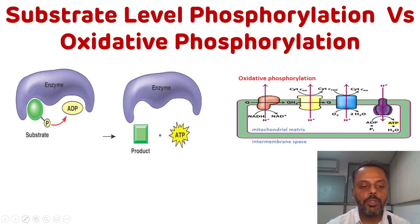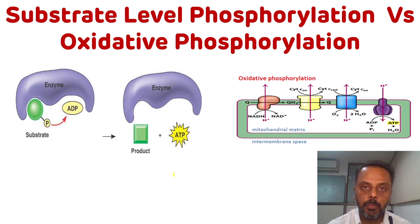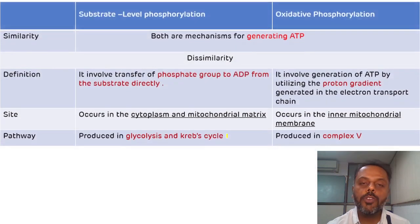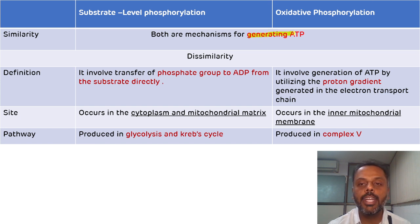Hello everyone. Today we are going to discuss one small but very important topic for the understanding of metabolism — the difference between substrate level phosphorylation and oxidative phosphorylation. First, we will see the similarity between them: both are related to generating ATP, meaning both are related to the synthesis of energy. That is the only similarity.